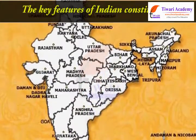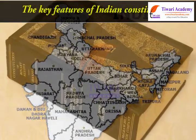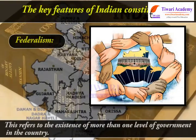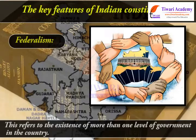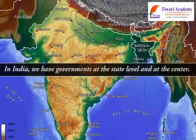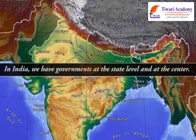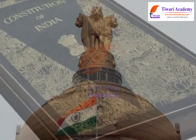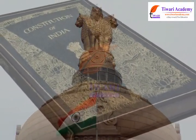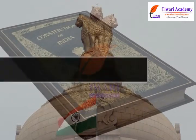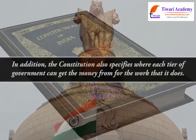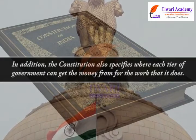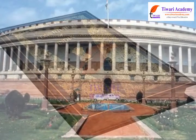The following are the key features of the Indian Constitution. One: Federalism. This refers to the existence of more than one level of government in the country. In India, we have governments at the state level and at the center. The Constitution contains lists that detail the issues that each tier of government can make laws on, and also specifies where each tier of government can get the money from for the work that it does.